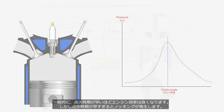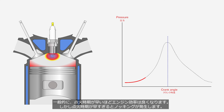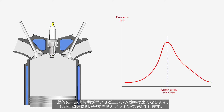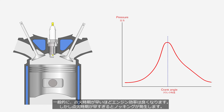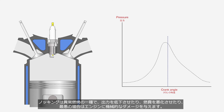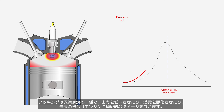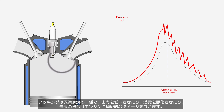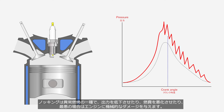Generally, earlier ignition timing makes for better engine efficiency. However, ignition timing being too early causes knocking — a kind of abnormal combustion that can reduce output, worsen fuel efficiency, and in the worst cases cause mechanical damage to the engine.